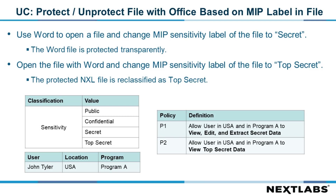As you can see, the document classification sensitivity has four labels: public, confidential, secret, and top secret. User John Tyler will be used in the demo. He is located in the United States and is in Program A.